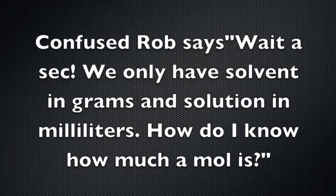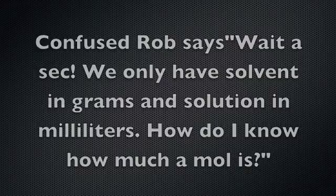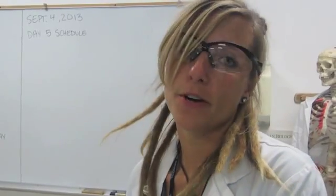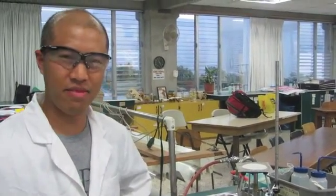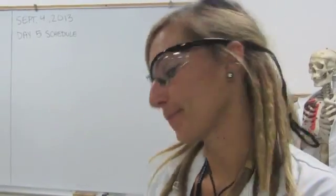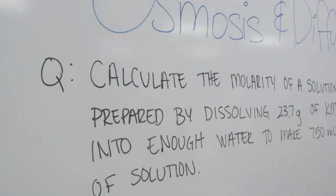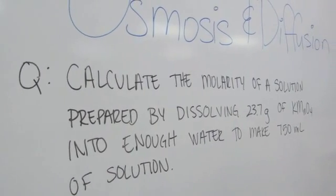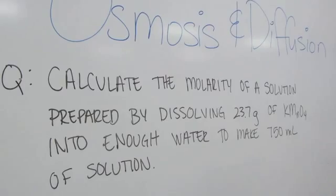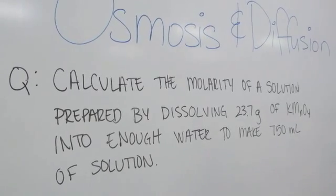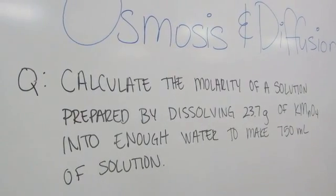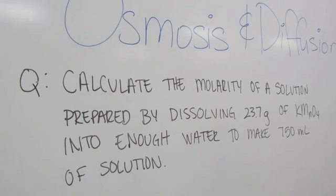Wait a sec, we only have a solvent in grams and solution in milliliters. How am I supposed to figure this out? How do I know what a mole is? No worries Rob, we just have to look at stoichiometry. Stoichi what? I don't get it. It doesn't play right. Stoichiometry, I'll show you. So let's look at an example problem. Calculate the molarity of a solution prepared by dissolving 23.7 grams of KMnO4, otherwise known as potassium permanganate, into enough water to make 750 milliliters of solution.